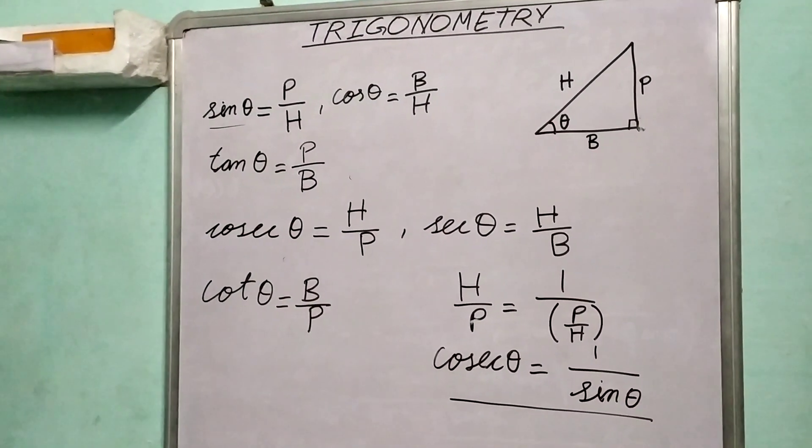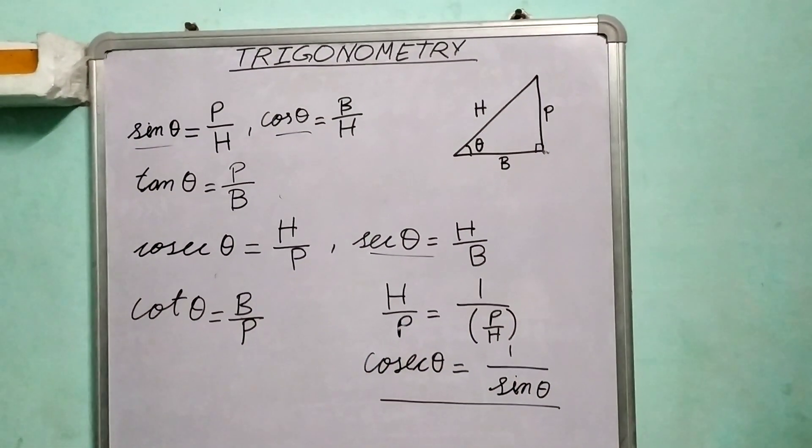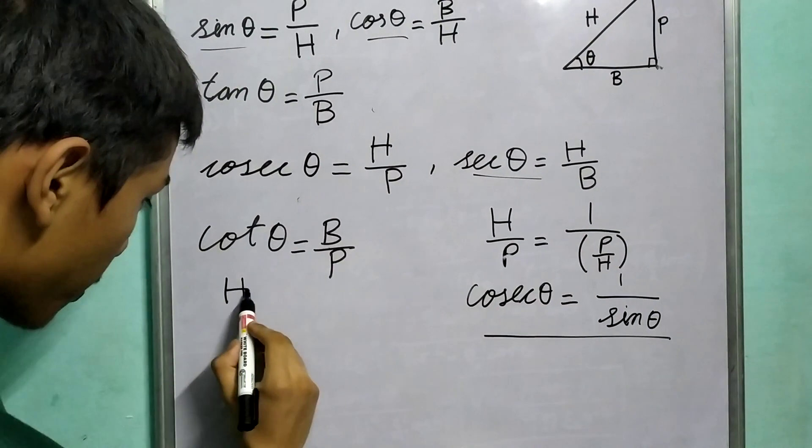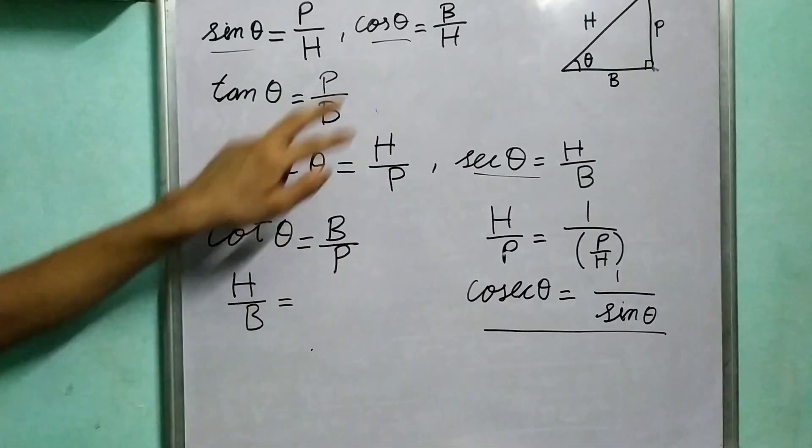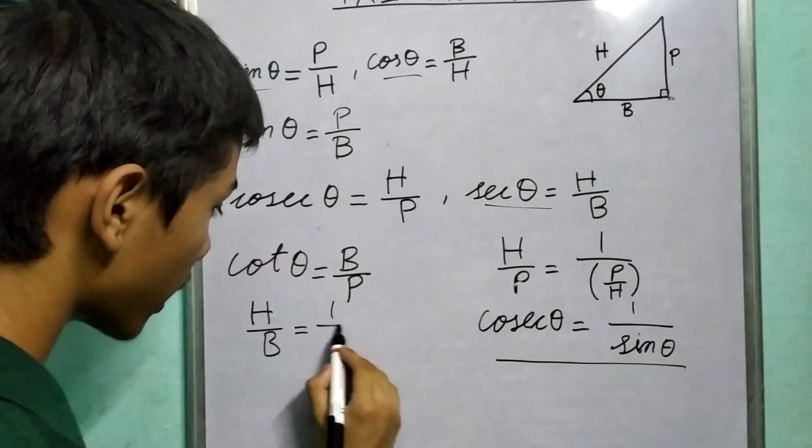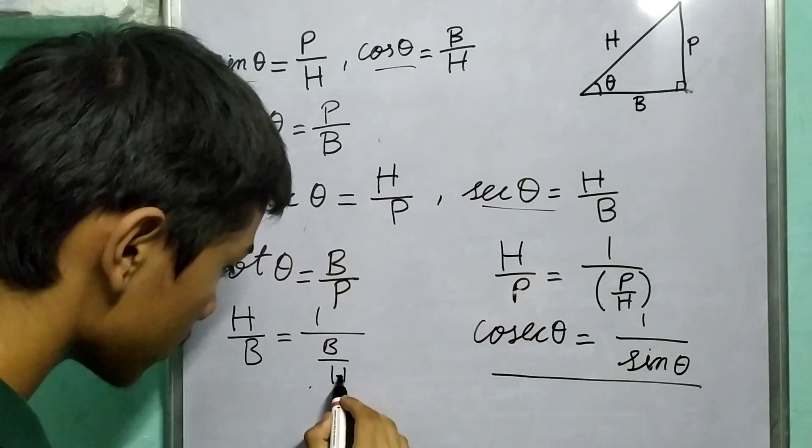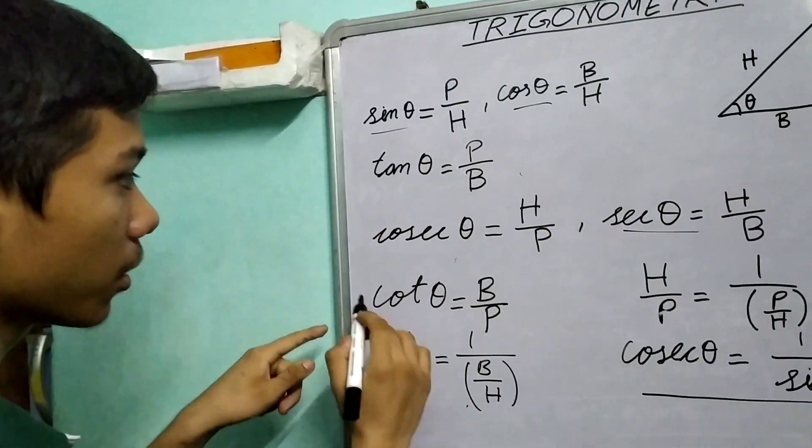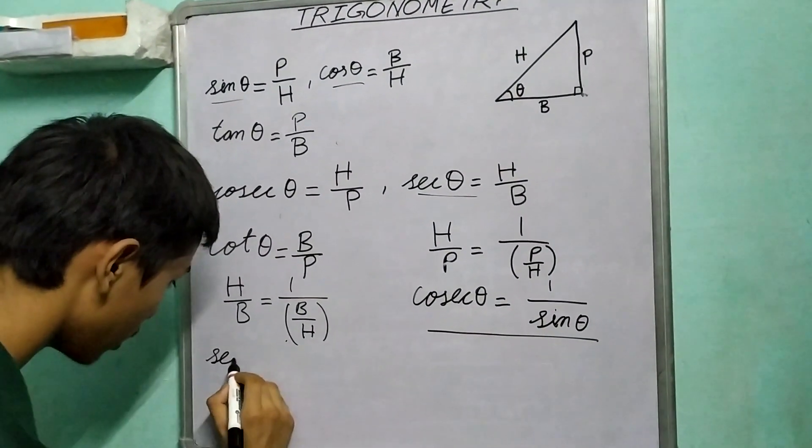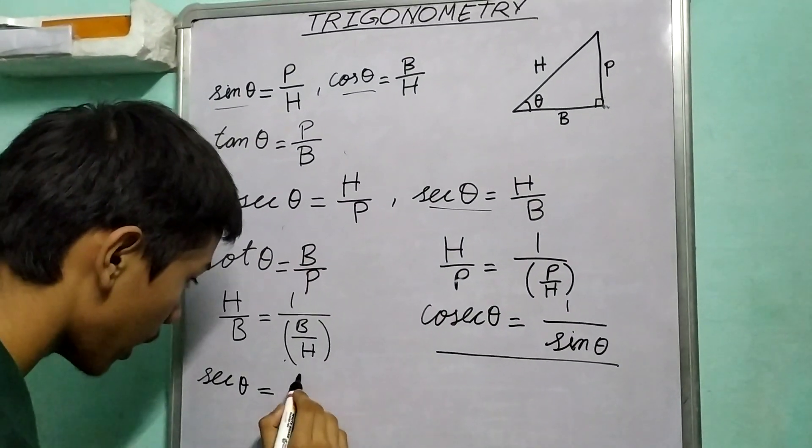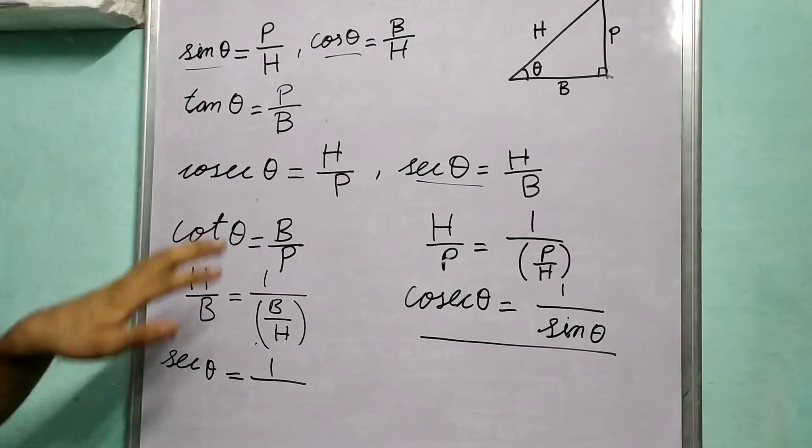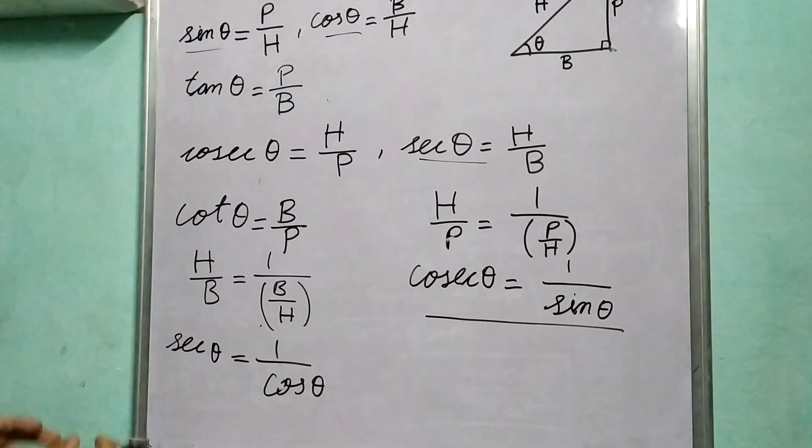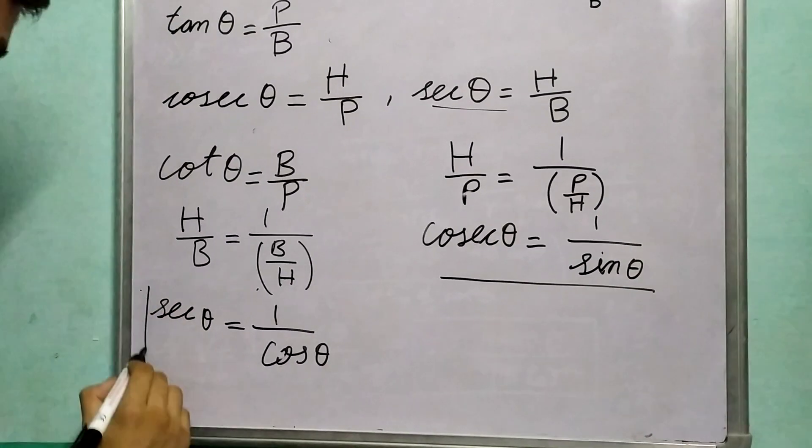Now similarly, we can prove this for sec theta. So we know that H upon B is the reciprocal of B upon H, so we can write it as 1 upon B upon H. Now what is H upon B? H upon B is sec theta, and 1 upon B upon H is 1 upon cos theta. So we can write that sec theta is 1 upon cos theta.